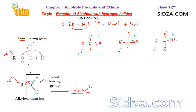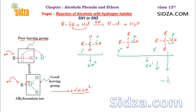The mechanism can be either SN1 or SN2 depending on the type of alcohol. Generally, primary alcohols undergo substitution through the SN2 mechanism, while secondary and tertiary alcohols follow the SN1 mechanism. In SN1, an intermediate carbocation forms when water leaves. From the tertiary alcohol you get a tertiary carbocation — carbon with three alkyl groups and a positive charge. From the secondary alcohol you get a secondary carbocation.